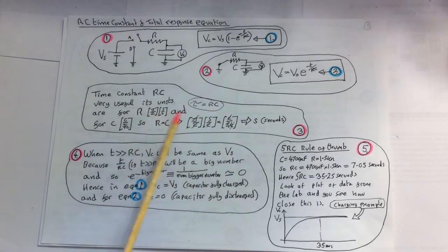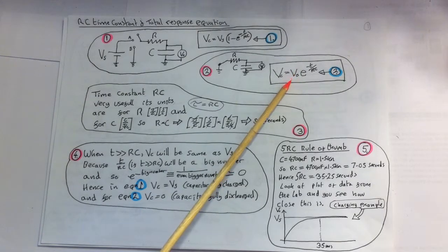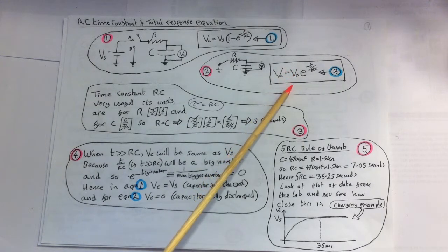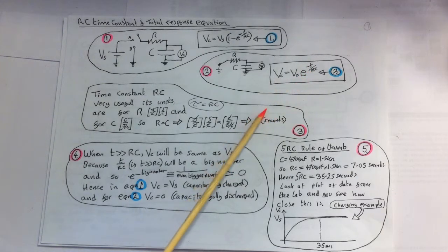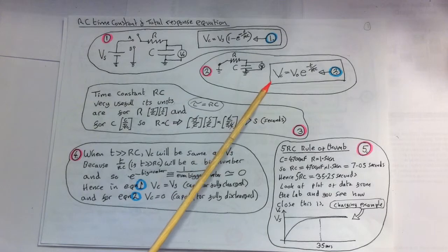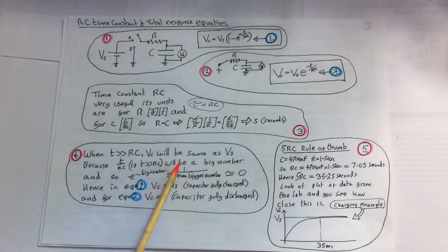If you look at equation 1 and 2, it's clear that when T is much greater than RC, we can see that T over RC is then a very large number over a smaller value, which gives a big number. And so e to the minus big number is equivalent to 1 over an even bigger number, which obviously is 0, hence the e term goes to 0.